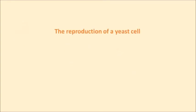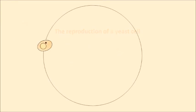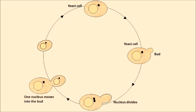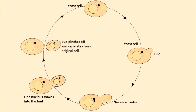The reproduction of a yeast cell. The yeast cell starts by growing, then a bud forms. The nucleus divides. One nucleus moves into the bud. The bud pinches off and separates from the original cell.